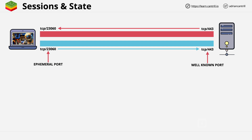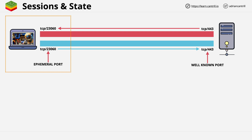Response traffic will come from the game server — its source port will be 443 — connecting to the client on destination port 23060. Now imagine you want to add security to the laptop using a firewall. The question is: what rules would you add? What types of traffic would you allow from where and to where in order for this connection to function without any issues? There are two types of capability levels you'll encounter from a security perspective.